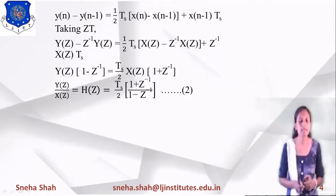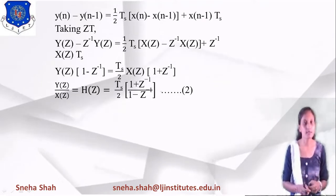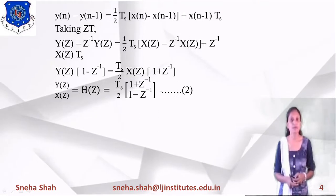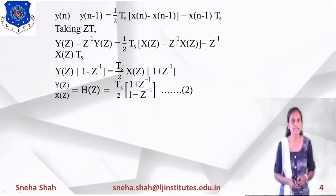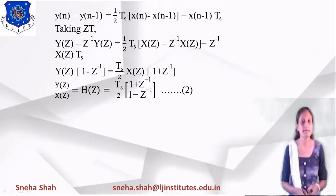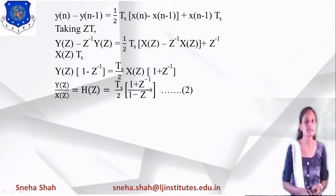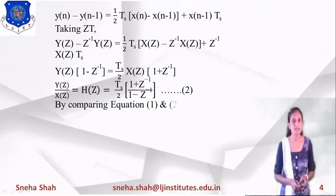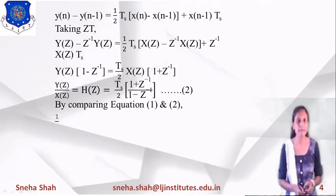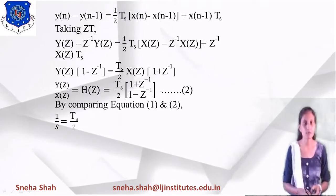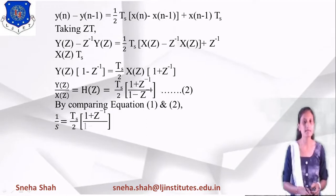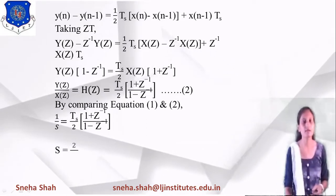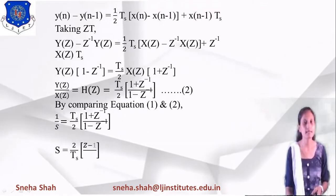Now equating equation 1 with equation 2: 1/s = (Ts/2)(1 + z⁻¹)/(1 - z⁻¹). Simplifying, the value of s = (2/Ts)(z - 1)/(z + 1). This is the basic relationship between the analog filter and its equivalent digital filter.